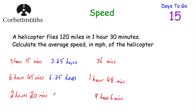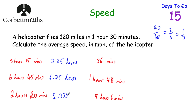2 hours and 20 minutes: 2 hours is 2. Then 20 minutes — that's 20 out of 60, which cancels down to one third of an hour. One third as a decimal is 0.3333 recurring. So 2 hours and 20 minutes is 2.3333 recurring hours — you could write 2.3 with a dot above it. Similarly, 40 minutes would be two thirds of an hour, so 0.6666 recurring.